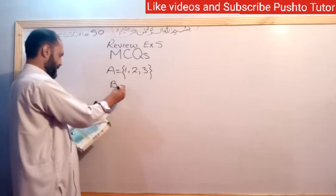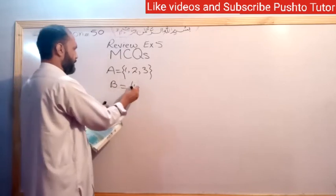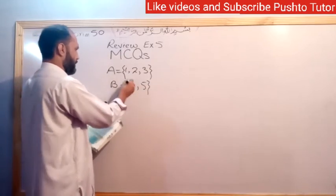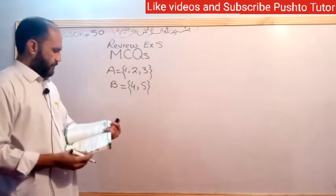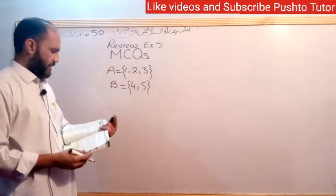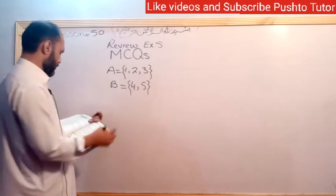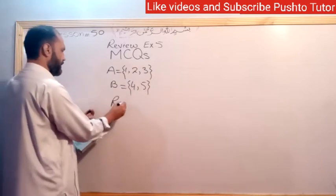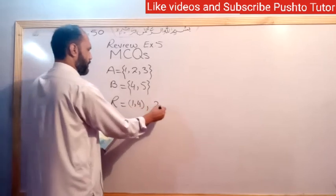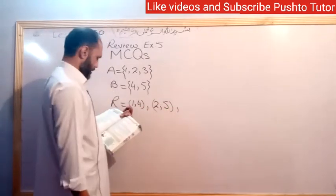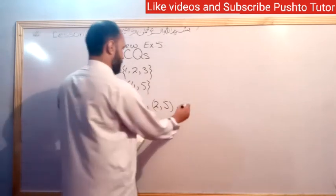B set equals 4, 5. Now your relation R is defined as: (1,4), (2,5), (1,4), (2,5), and (3,4).